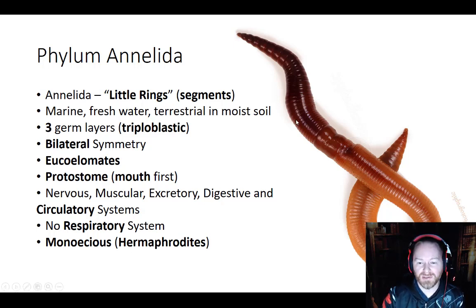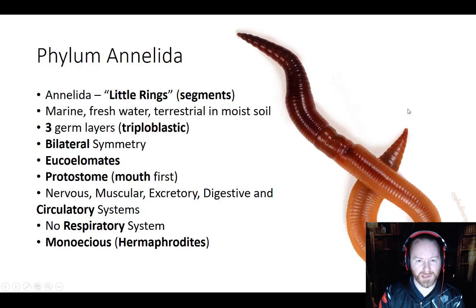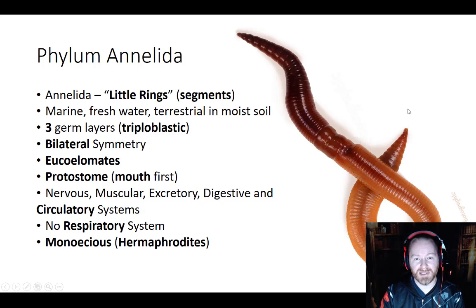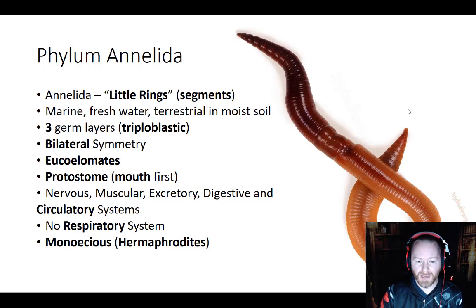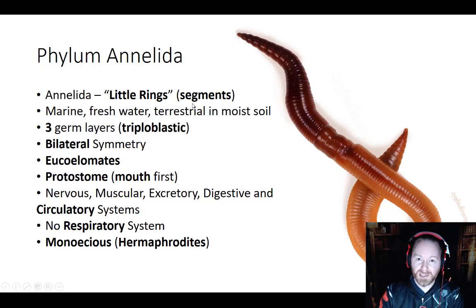If you look at an annelid, you can see all these little rings that go all the way down the body. One of the concepts we talked about earlier in our first lectures was cephalization and segmentation — that bodies are built in segments. We actually show segmentation ourselves: cranial, thoracic, abdominal, and pelvic segments, which are more or less specialized segments, but segments nonetheless.